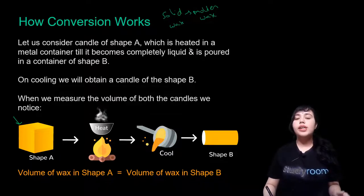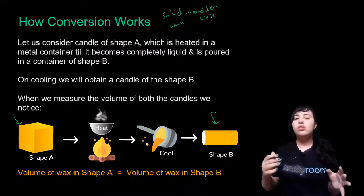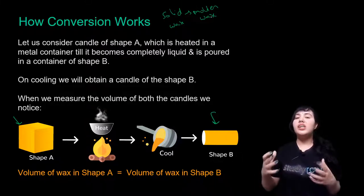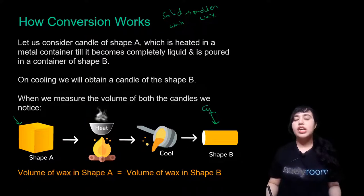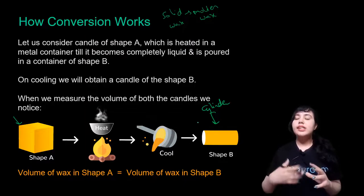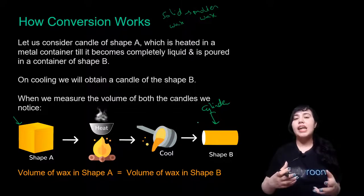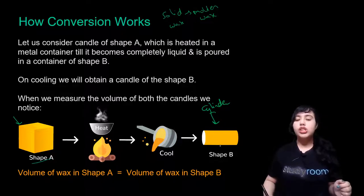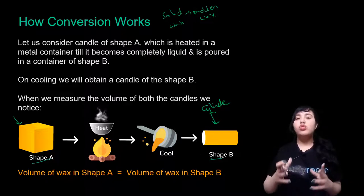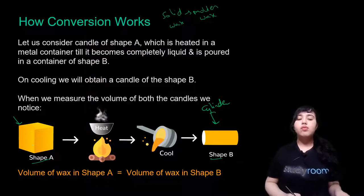Now what do we do with this liquid wax? We cool it, but in container B. Liquids take up the shape of the container in which they are kept. So the candle will turn from the shape of a cube or cuboid to another shape — actually a cylinder. But in this process, the amount of wax would still remain the same. Regardless of the shape, the volume of the candle remains the same: volume of shape A equals volume of shape B.